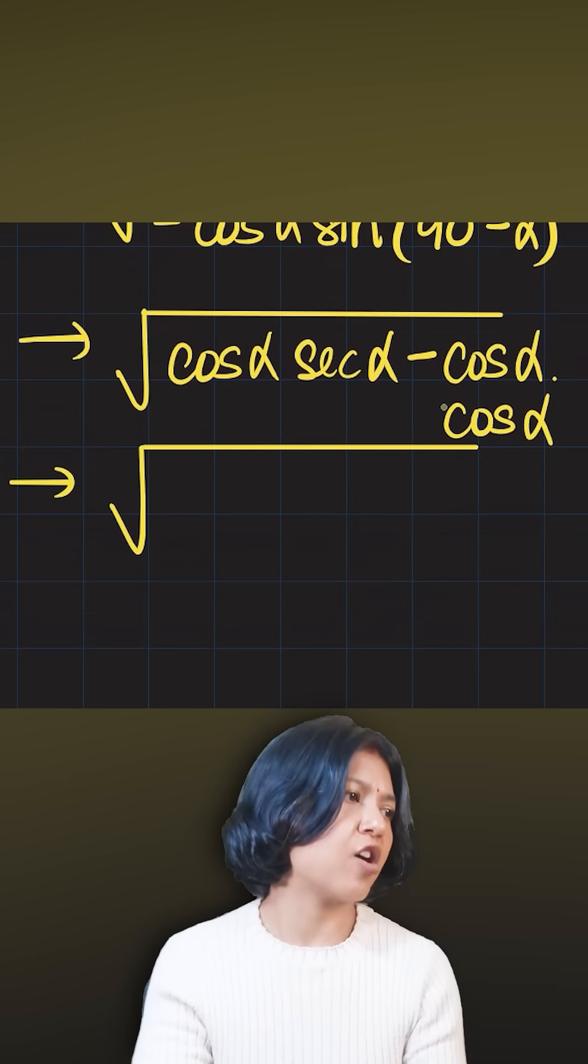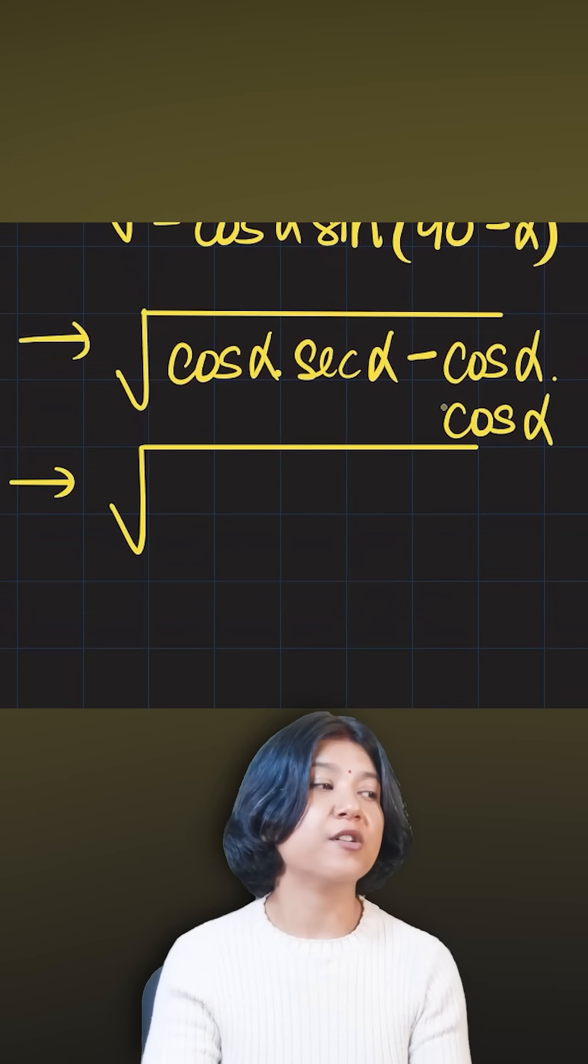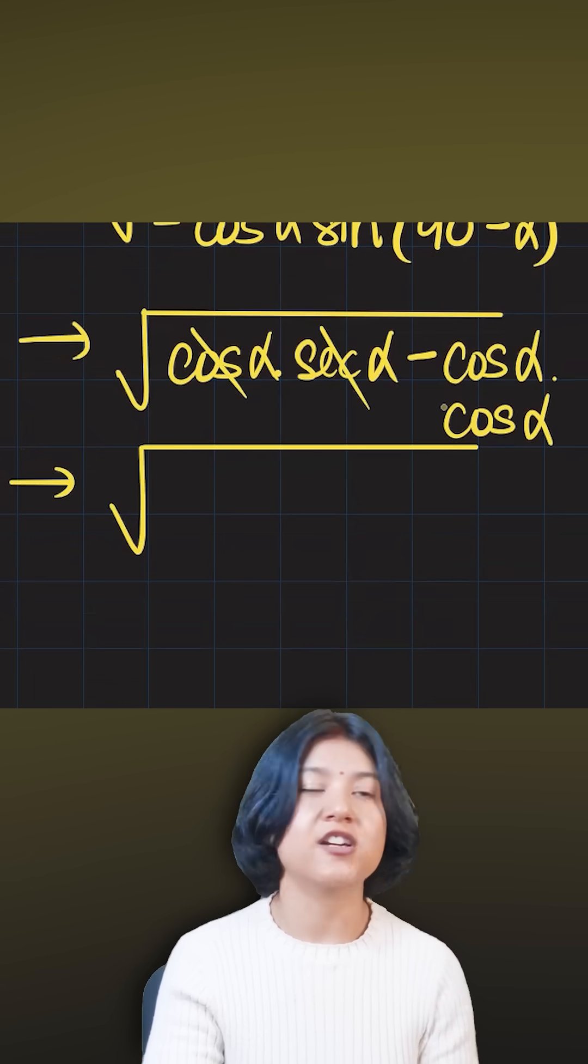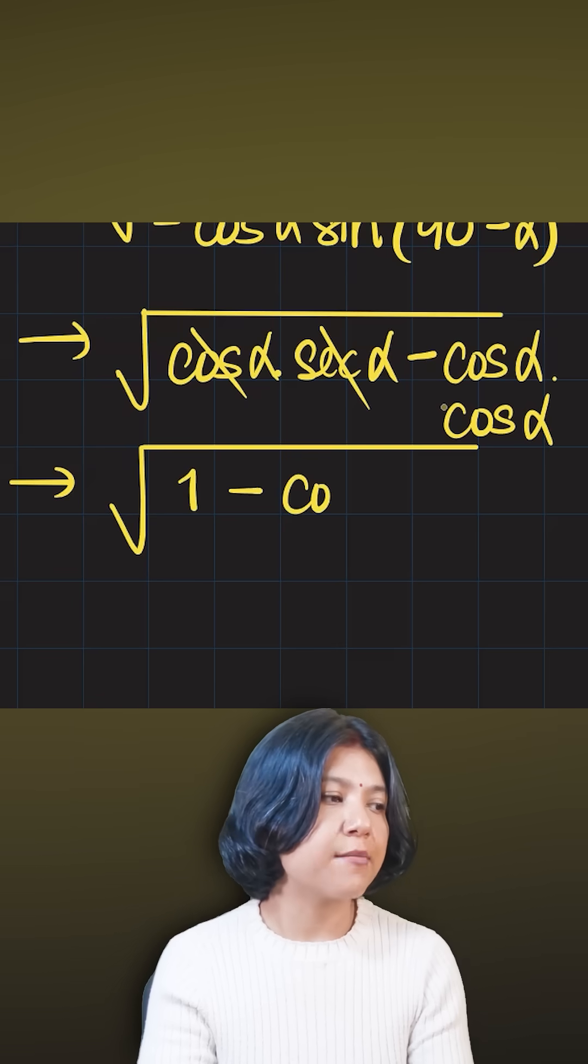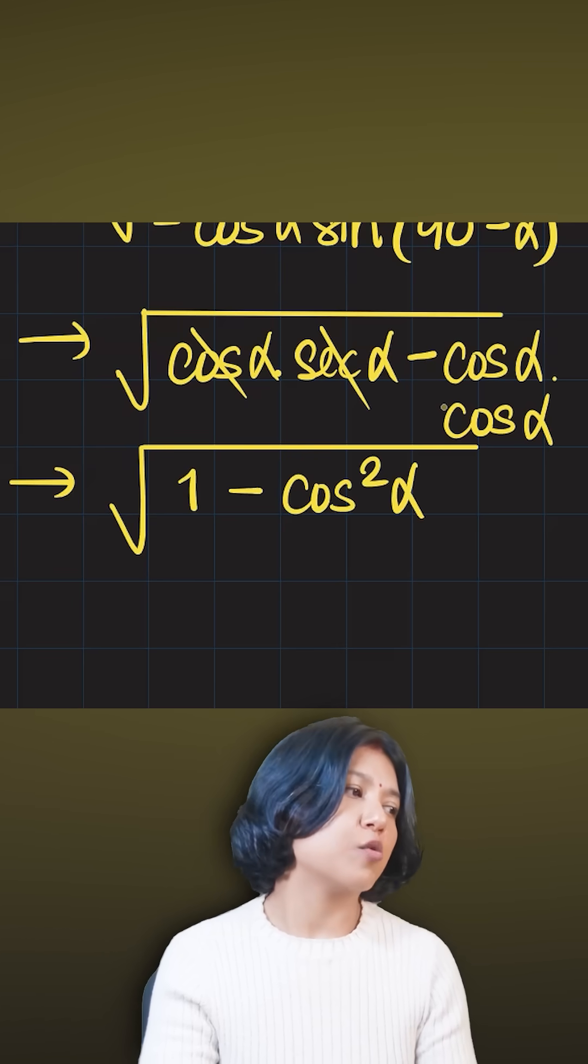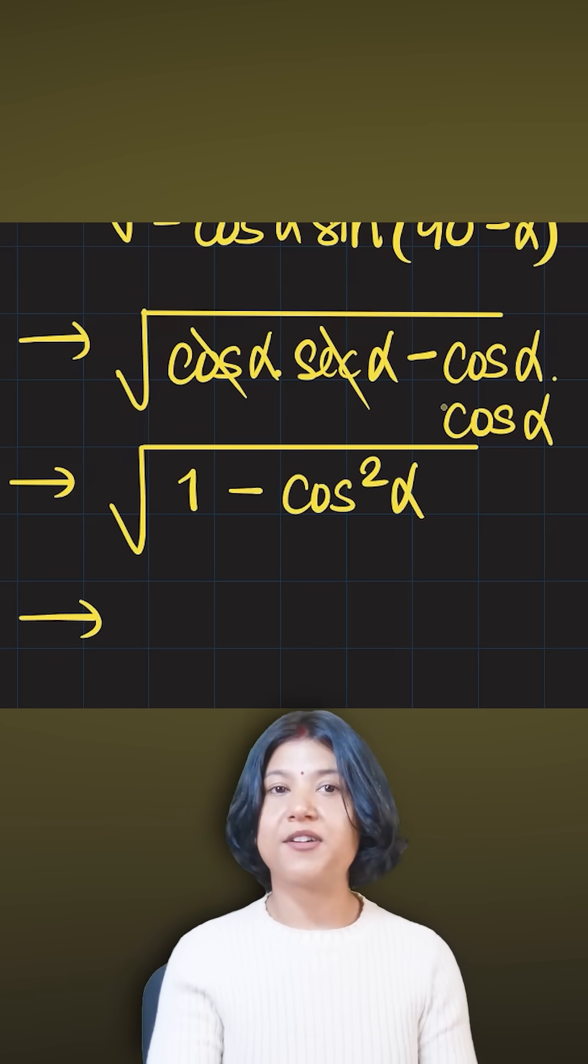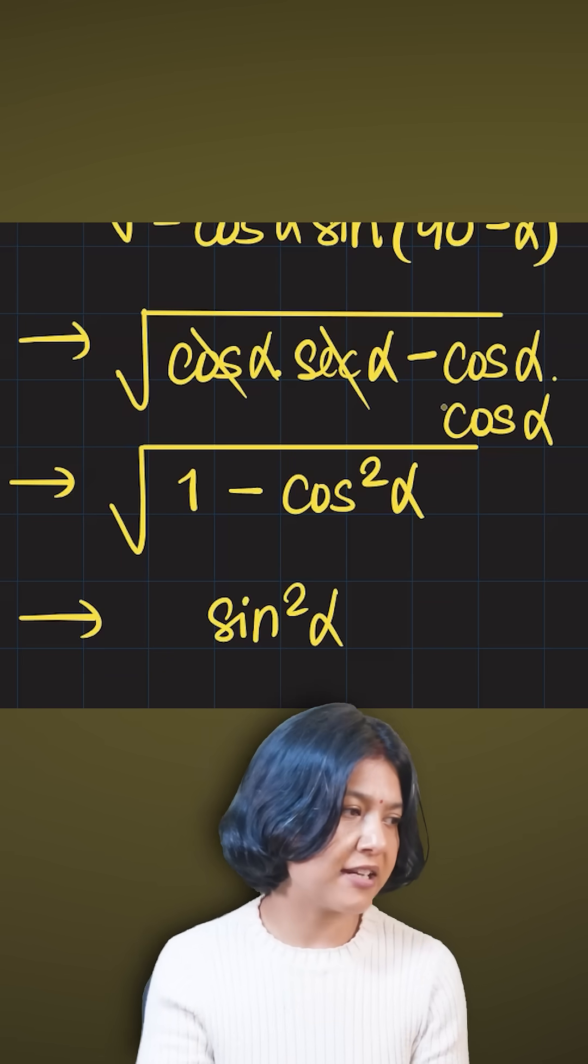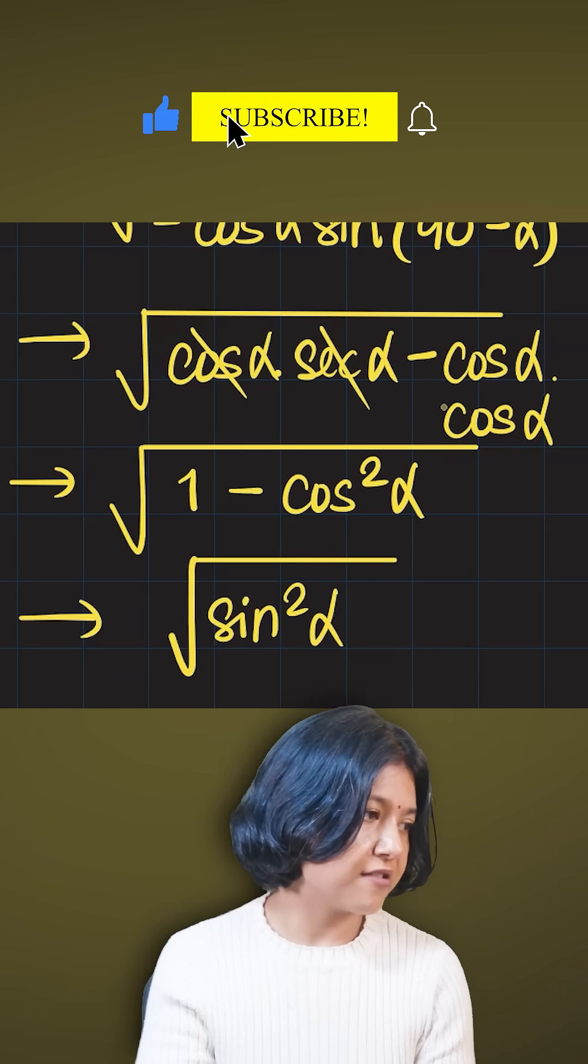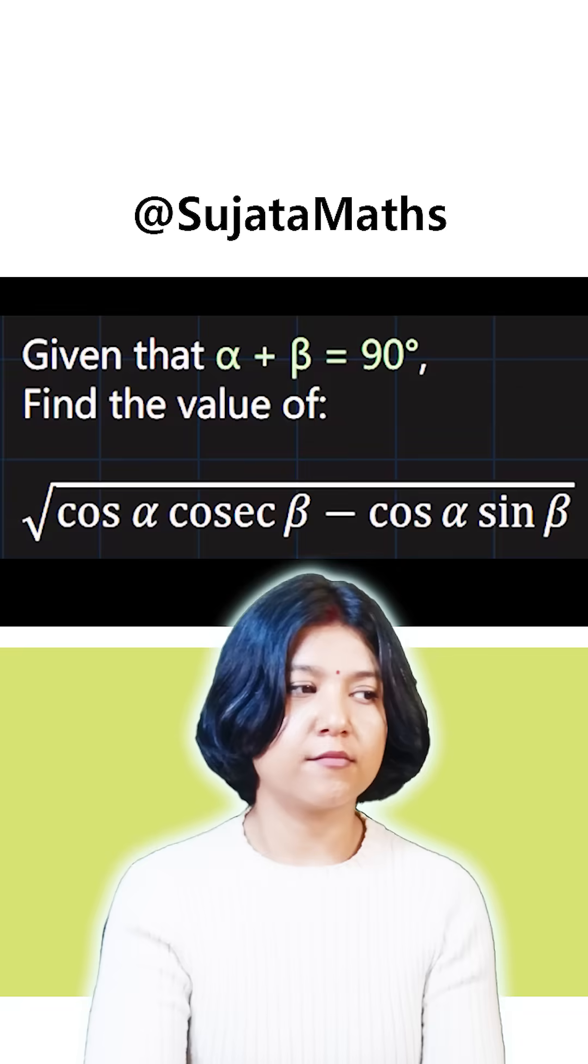Cancelling out gives you just one minus cos times cos, which is cos squared. So one minus cos squared alpha. Now, one minus cos squared alpha can be written as sin squared alpha—this comes from the Pythagorean identity. The square and root cancel out, giving me the final answer: sin alpha.